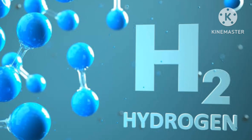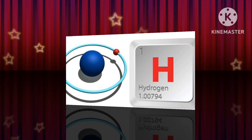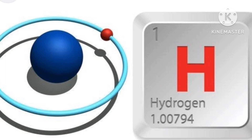The hydrogen atom has a nucleus consisting of a proton bearing one unit of positive electrical charge. An electron bearing one unit of negative electrical charge is also associated with this nucleus. The structure of a hydrogen atom is the simplest among all other elements — it consists of a single proton and a single electron, and no neutron is present in its nucleus.